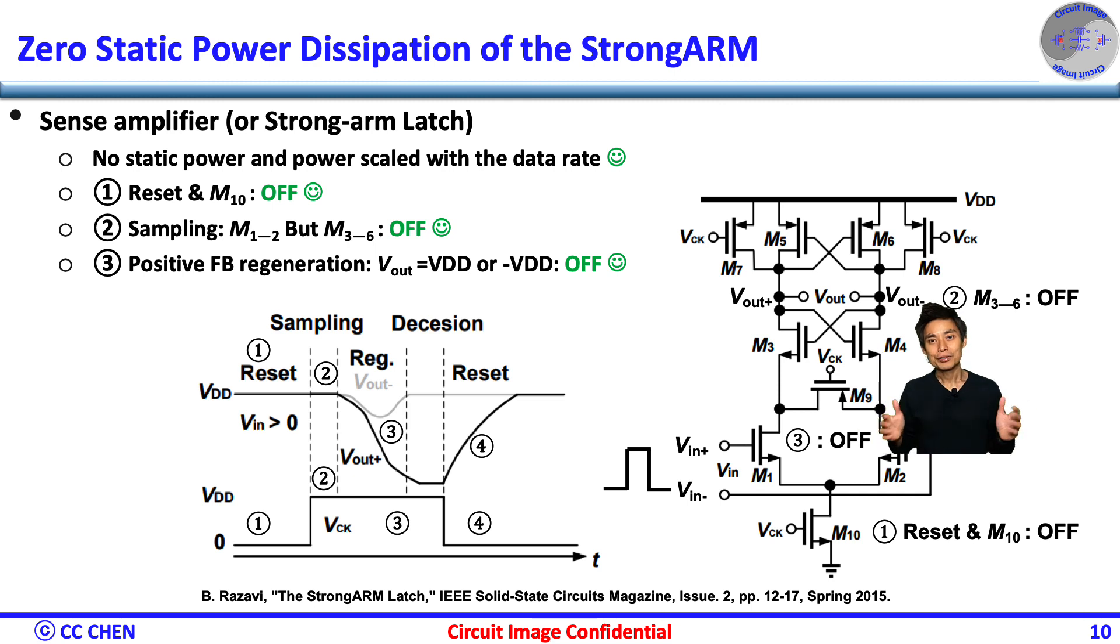Third, then both the output levels are regenerated to almost rail-to-rail level, and the latches will be turned off to cut both VDD and ground path without any DC current. Therefore, the most attractive image of the zero DC current makes the strong-arm latch scale power with the data rate as well as the CMOS logic.